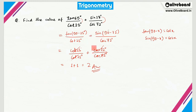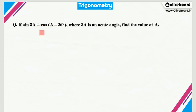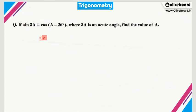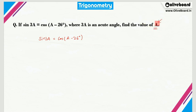Now let's move on to question number 2. Before solving this, I'd like to request you to solve this question by yourself and then tally your answer with mine. So I hope you've tried it. The question is: sin 3a = cos(a − 26°), where 3a is an acute angle. Find the value of a in degrees.